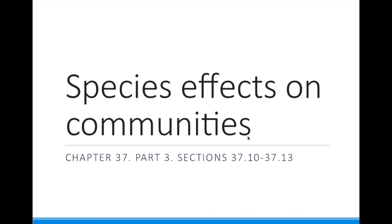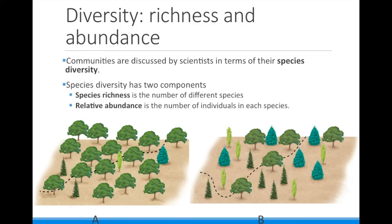We saw from the food chains and food webs that certain species can have a very great effect on the entire community. Ecologists use the species diversity of a community to evaluate it and make environmental decisions. Species diversity has two parts: species richness and relative abundance.